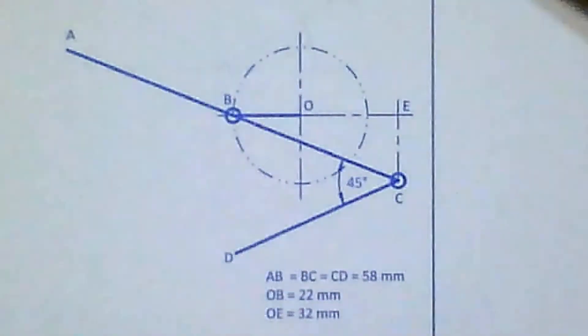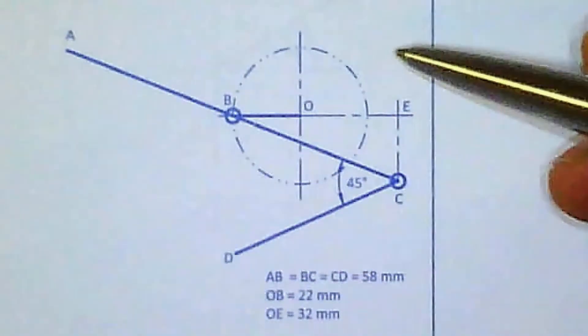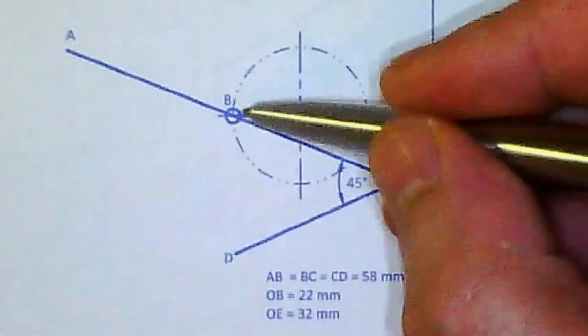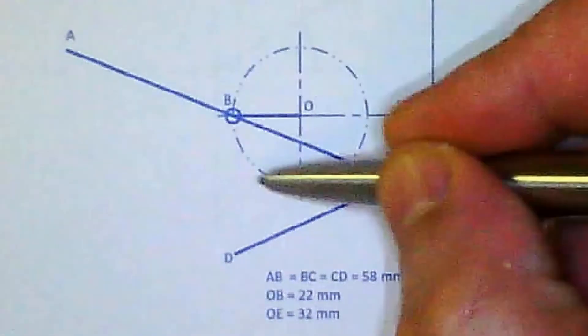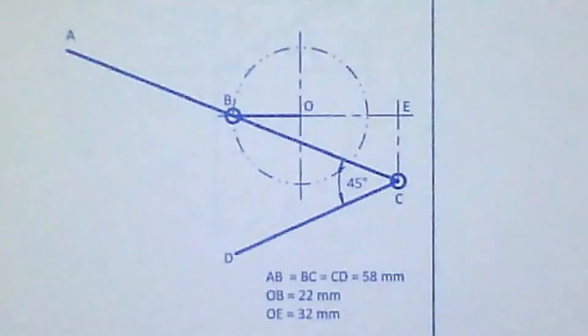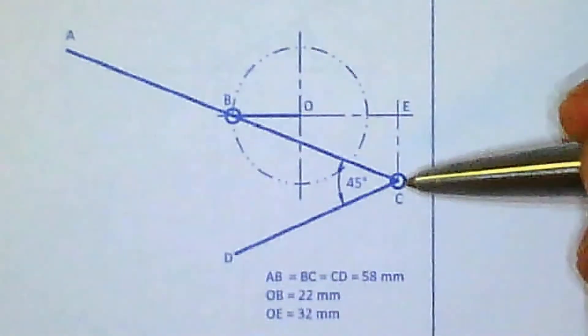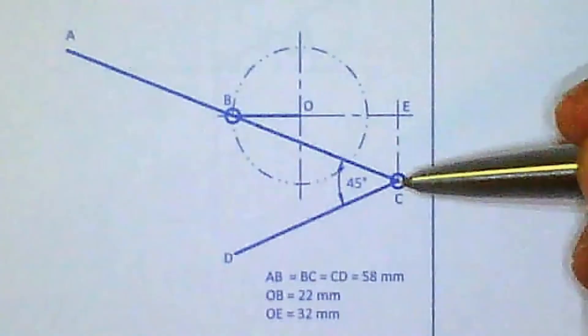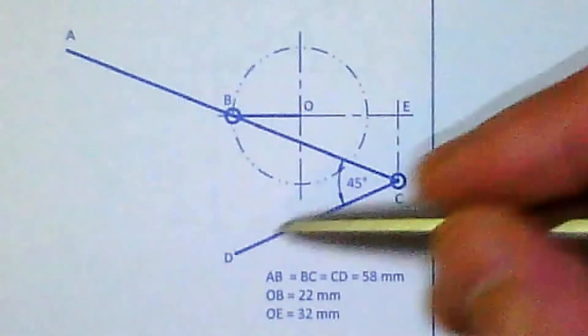For today's mechanism, we can clearly see the diagram on the top left, that point B is going to move around this imaginary circle. Point A is going to be free to move. Point C is going to be free to move, but it's going to oscillate around point D.